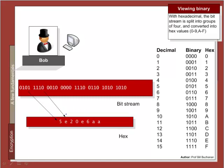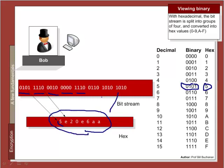Hexadecimal is a convenient way for viewing binary. In hex, we take four bits at a time and convert them into a hex character. For example, 1001 maps to the hex character 5, and the next nibble maps to E, and so on. Hexadecimal is a convenient method to represent our bit stream, and we only have to remember 16 different characters.